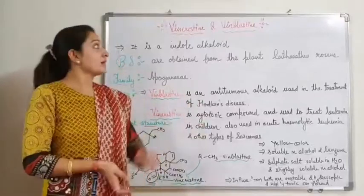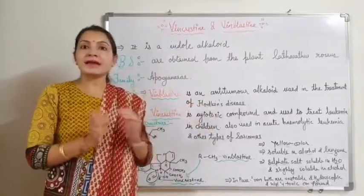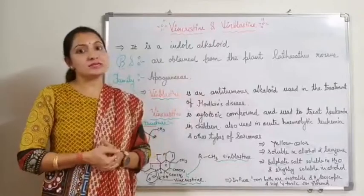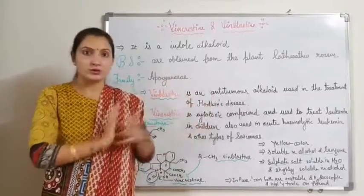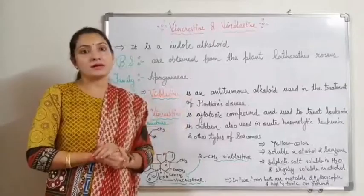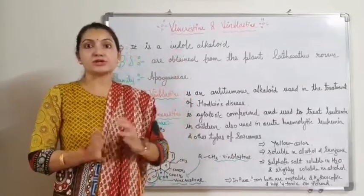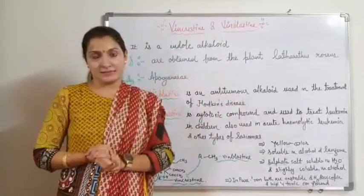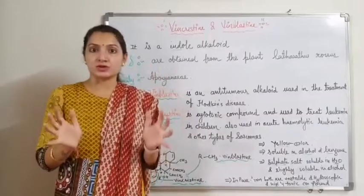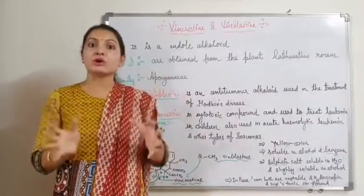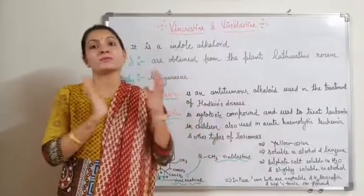Today we are going to study the isolation and estimation of Vincristine and Vinblastine. These are alkaloidal phytoconstituents and secondary metabolites which come under the class of alkaloids. Specifically, they are indole alkaloids. Vincristine and Vinblastine contain an indole ring in their chemical structure, and because of this indole ring they are classified as indole alkaloids.